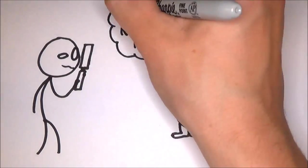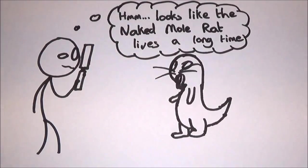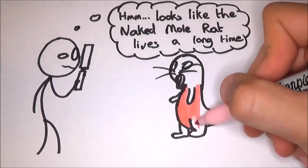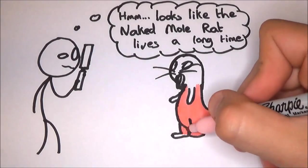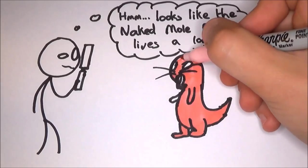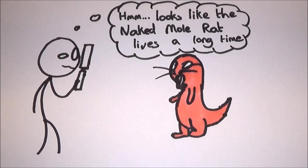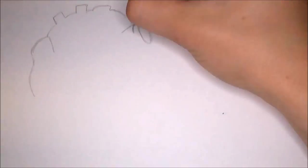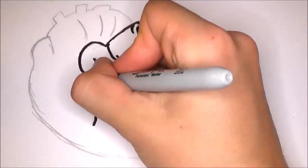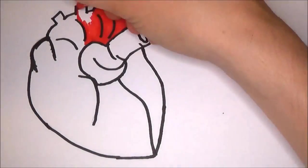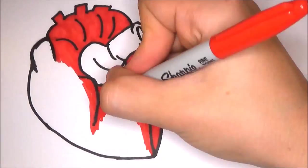Most other rodents of its size have short lifespans, a maximum of four to five years for mice and rats, but the naked mole rat can live for over 20. Scientists are trying to explain why they can live such a long time, but it might be due to their very low metabolism and their ability to reduce it further during times of hardship.